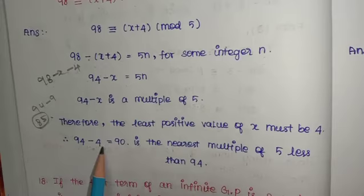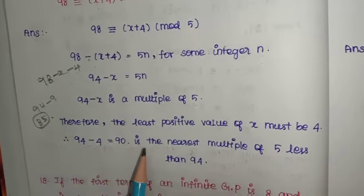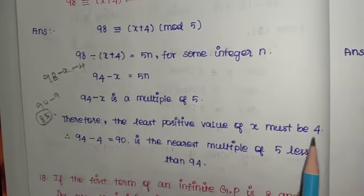94 - 4 = 90, which is also a multiple of 5. Therefore, the least positive value of x must be 4.